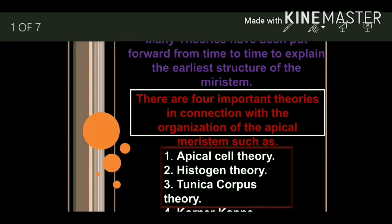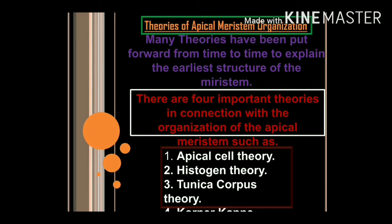In this lecture we are going to study different theories regarding the organization of apical meristems. There is always a controversy regarding growth and development of apical meristems of root, shoot and flower and their differentiation. Intensive studies have been going on since the 19th century. Many theories have been put forward from time to time to explain the earliest structure of the meristems.